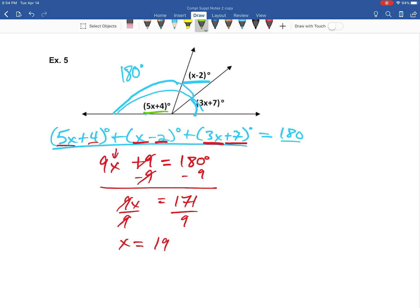And then what you can always do last is plug that value in for these different angles. So, for example, 5 times 19. Let's go ahead and clean this up a little bit so we can see it a little bit easier. 5 times 19 is 95 plus 4, which is 99 degrees. So this first angle right here is 99. This second one is 19 minus 2, which is 17. And then this last angle right here is 3 times 19 plus 7, which is 57 plus 7. And so then that will be a grand total of 64 degrees.